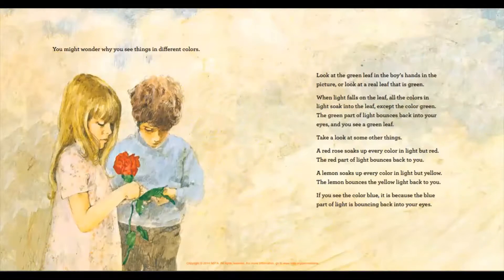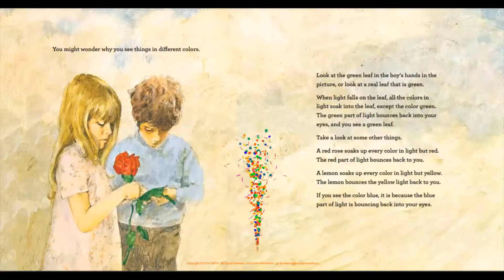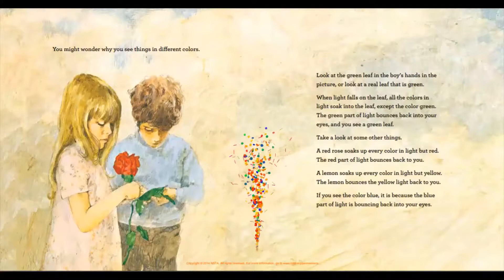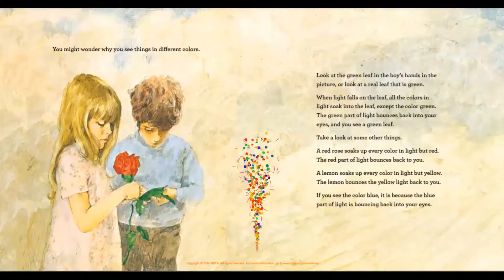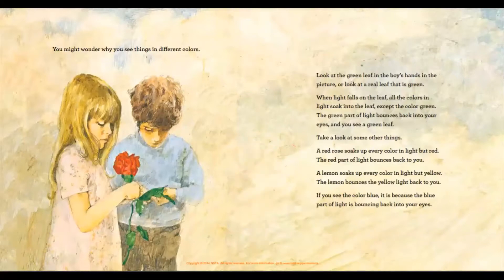You might wonder why you see things in different colors. Look at the green leaf in the boy's hands in the picture, or look at a real leaf that is green. When light falls on the leaf, all the colors in light soak into the leaf except the color green. The green part of light bounces back into your eyes and you see a green leaf. A red rose soaks up every color in light but red — the red part of light bounces back to you. A lemon soaks up every color in light but yellow — the lemon bounces the yellow light back to you. If you see the color blue, it is because the blue part of light is bouncing back into your eyes.